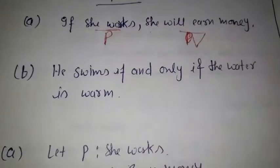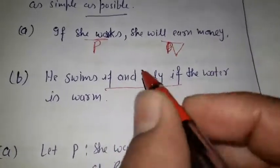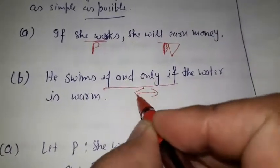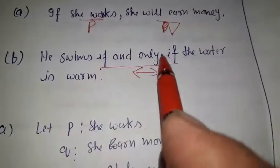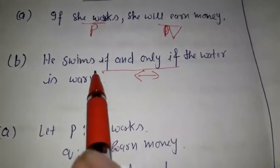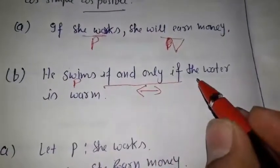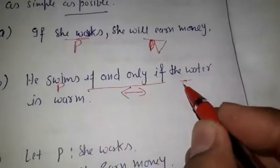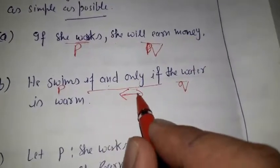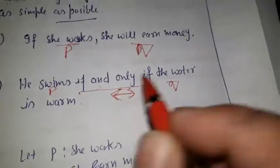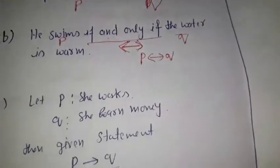The second statement is: 'He swims if and only if the water is warm.' Here 'if and only if' is the necessary and sufficient condition defining the biconditional — the double implication. There are two propositions: P = 'he swims' and Q = 'the water is warm', connected by if and only if, that is the double implication, so it is P double implies Q.